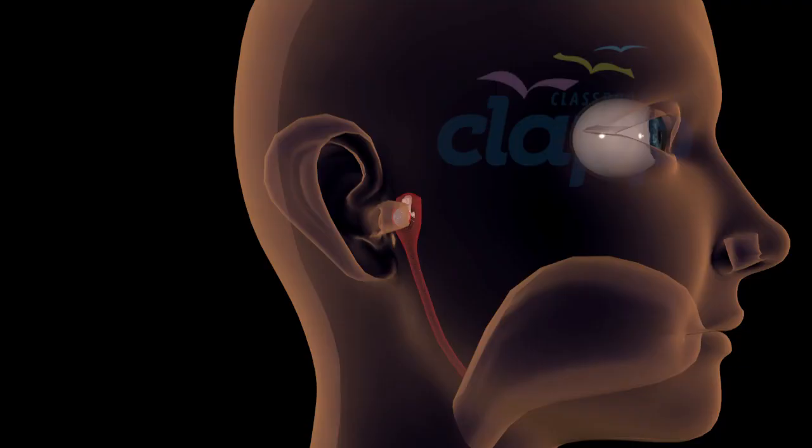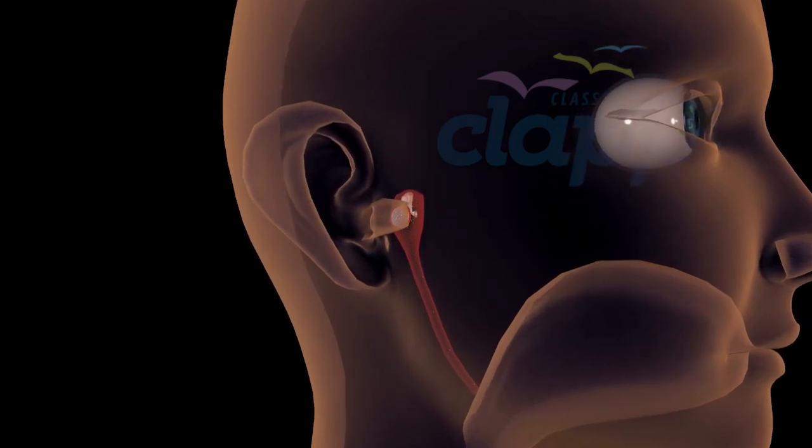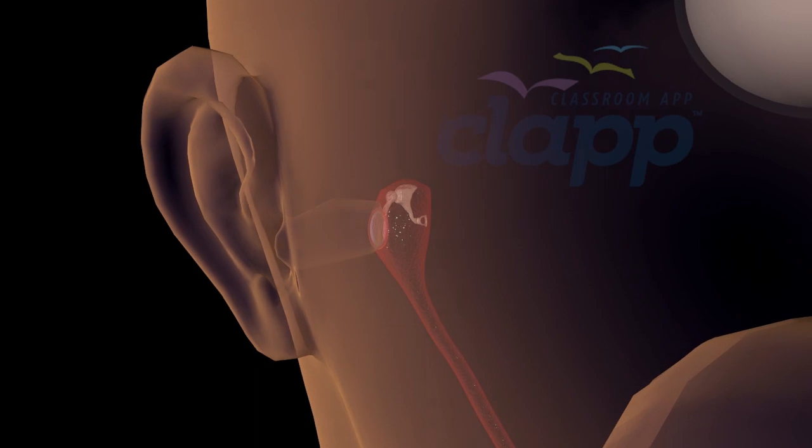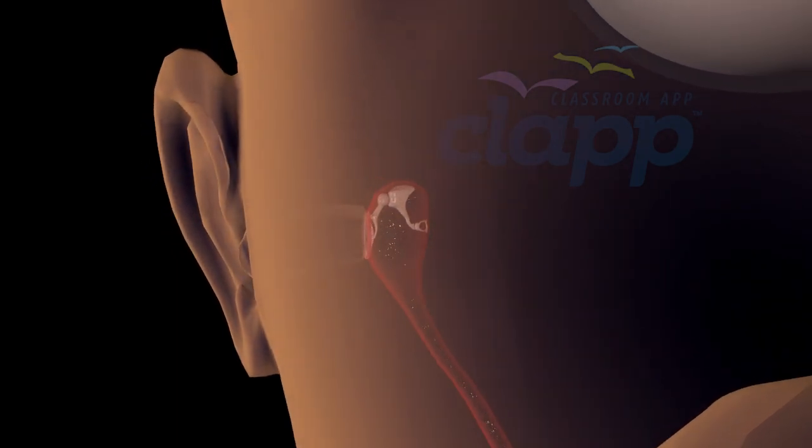Each human ear has one eustachian tube located in the middle ear cavity and it plays a crucial role in maintaining proper air pressure between the middle ear and atmosphere.